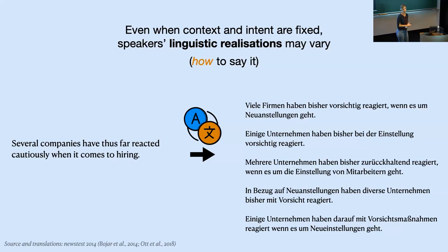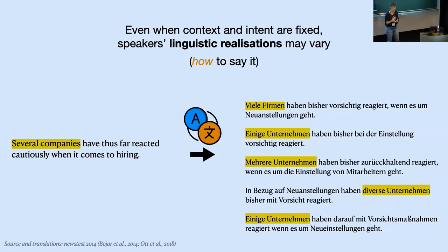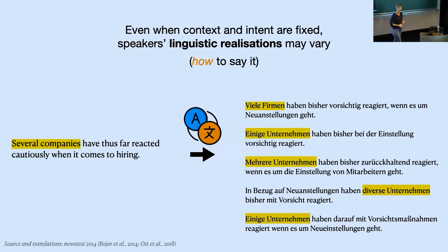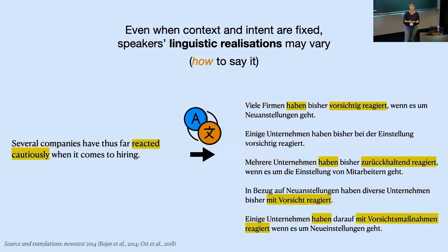Consider this translation scenario. We have the sentence in English: 'Several companies have thus far reacted cautiously when it comes to hiring,' and five possible translations into German. The phrase 'several companies' can be expressed in different ways in German — some the same, some different. And the same for 'reacted cautiously' — it doesn't have to be expressed the same way all the time. So the intent, what is being said, is constrained, but how we say it can have quite some variability.